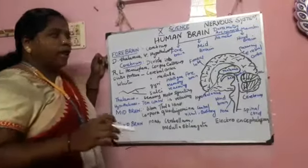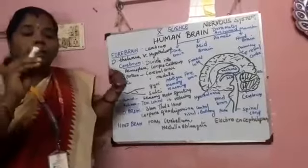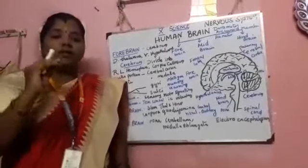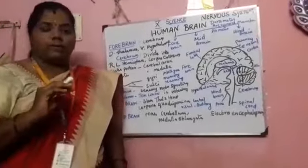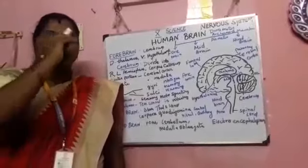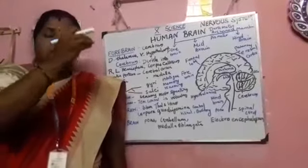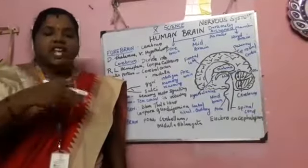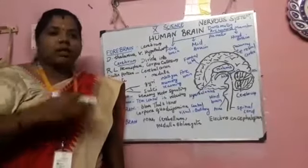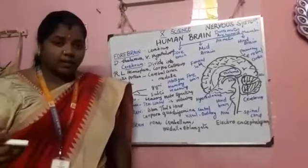Now we have to see the nerve impulse. Impulse means a force. So the nerve impulse means through the neuron, some force has been exerted and how it has been transmitted.